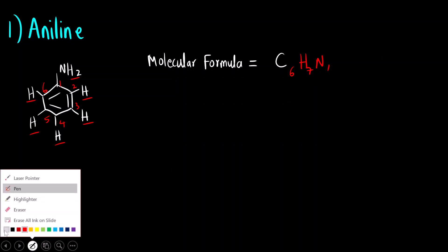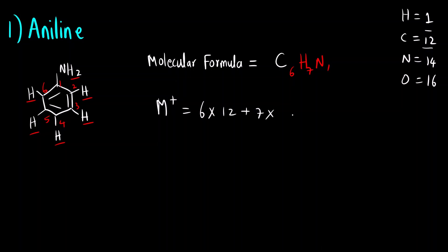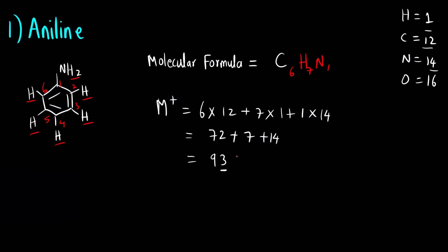Now we find the molecular weight, which will be the M+ value. Atomic masses to remember: H=1, C=12, N=14, O=16. So: 6×12 + 7×1 + 1×14 = 72 + 7 + 14 = 93. This is an odd value, so M+ is odd. Therefore the number of nitrogen should also be odd — there is one nitrogen, which is odd. Hence the nitrogen rule is satisfied.